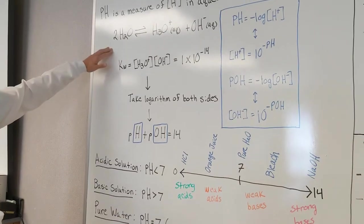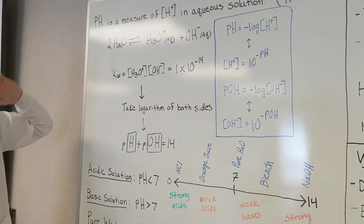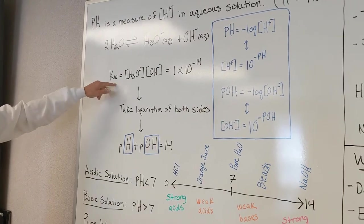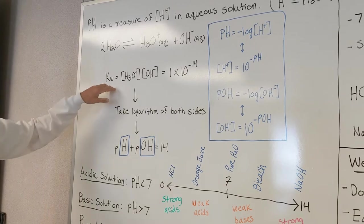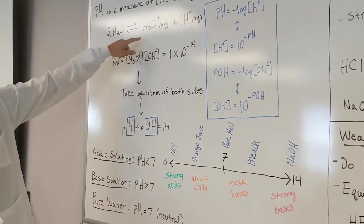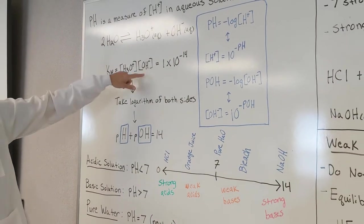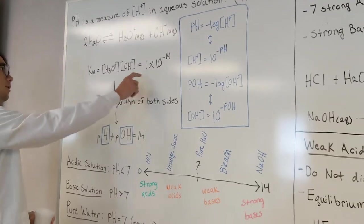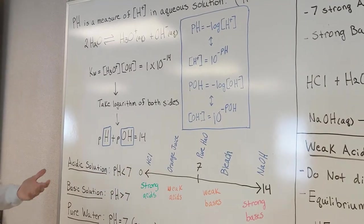So basically, you got your equation, and you know that you can set up an equilibrium constant equation. So our KW, the W standing for water in this case, is going to be our products, which are H3O plus, OH minus, is equal to KW. And in this case, KW is 1 times 10 to the negative 14.